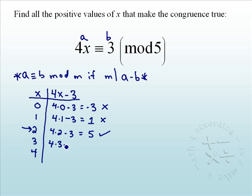We'll try 3. 4 times 3 minus 3 is 9. 5 does not go into 9.